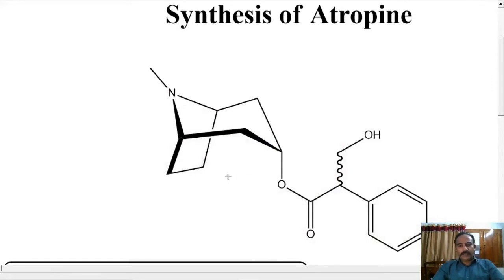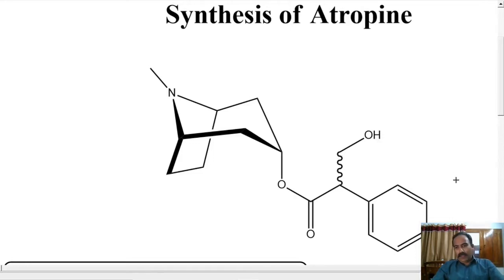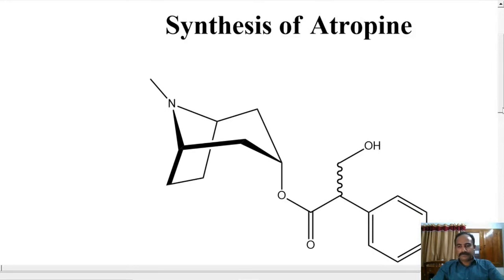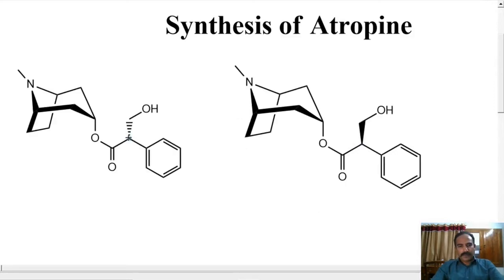Let us have a closer look at this structure. It contains a nitrogen and this bicyclic ring. This is also racemic. So if the molecule is a particular enantiomer, it is called hyoscyamine. And if it's a racemic mixture — both enantiomers present in equal amounts — then it is called atropine. So that's a curious factor here; it has to be racemic.